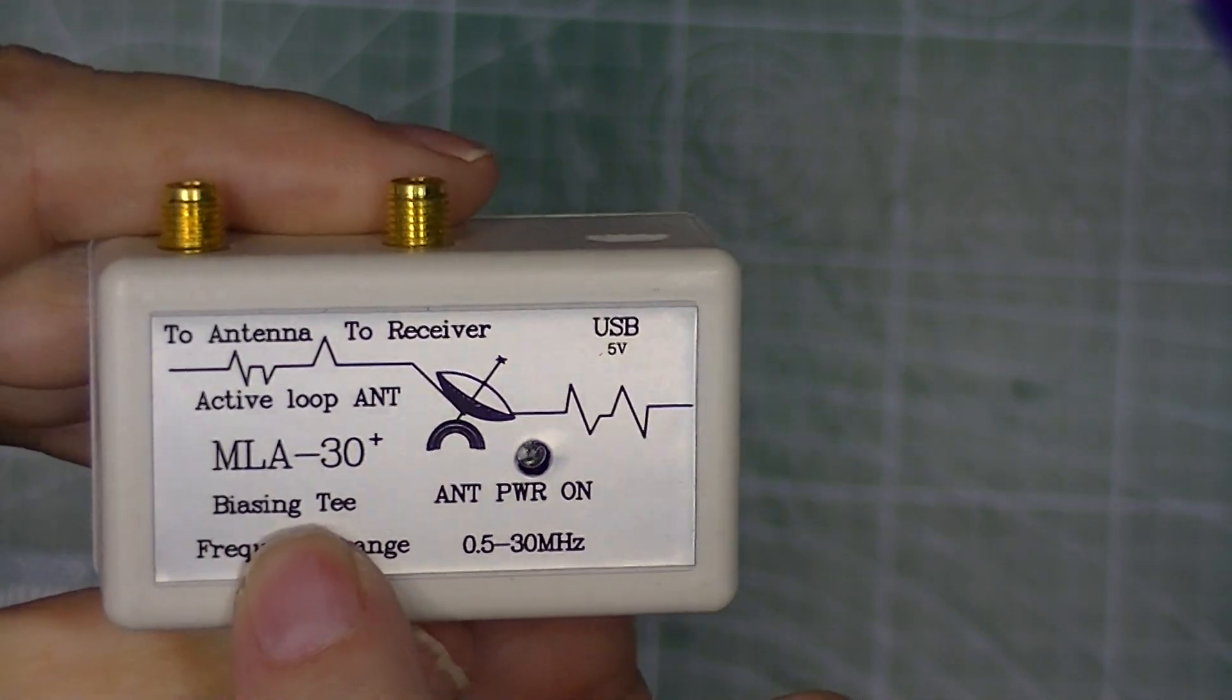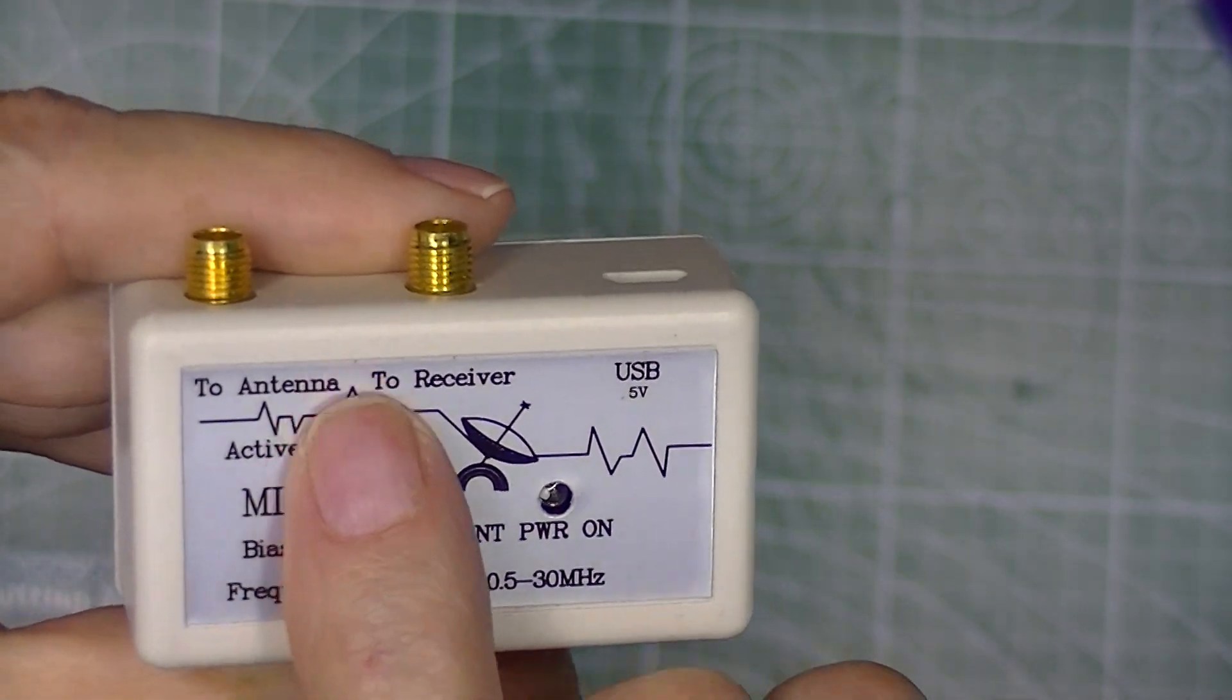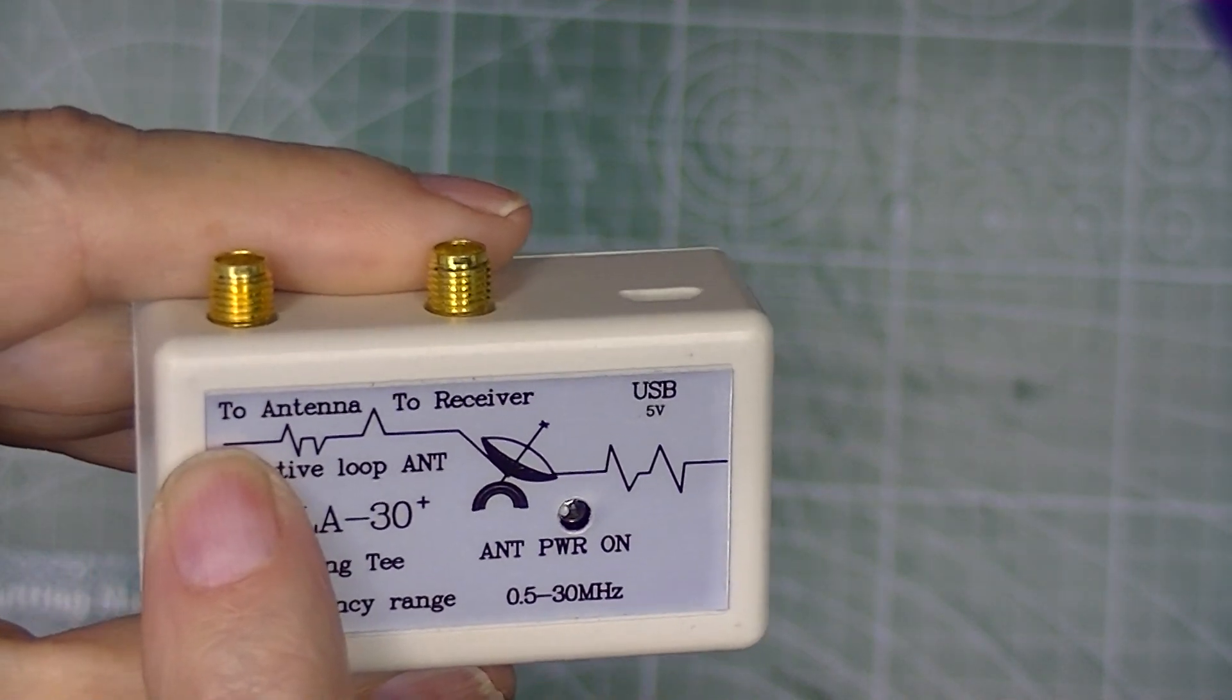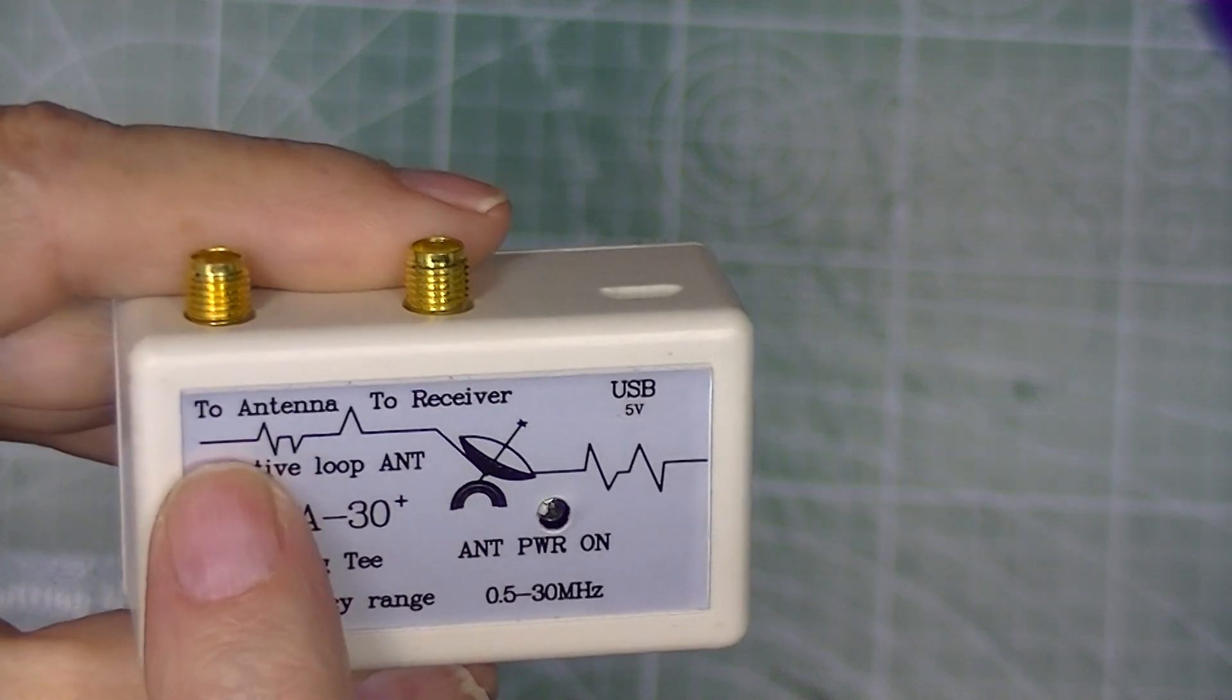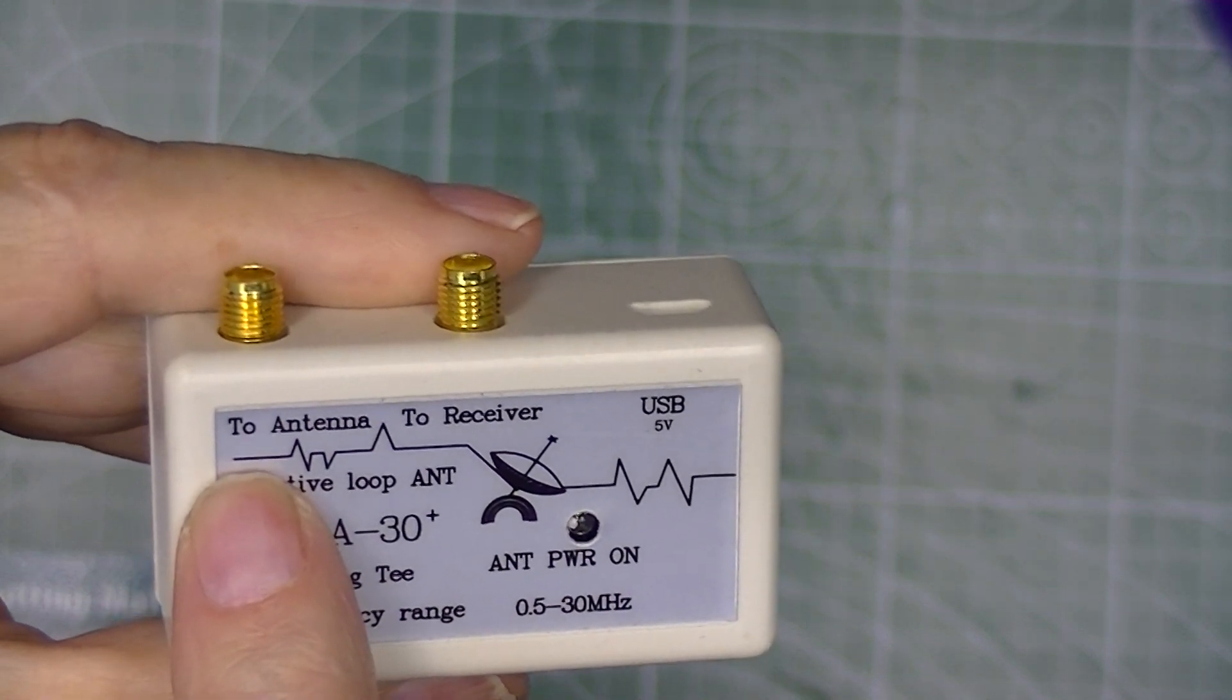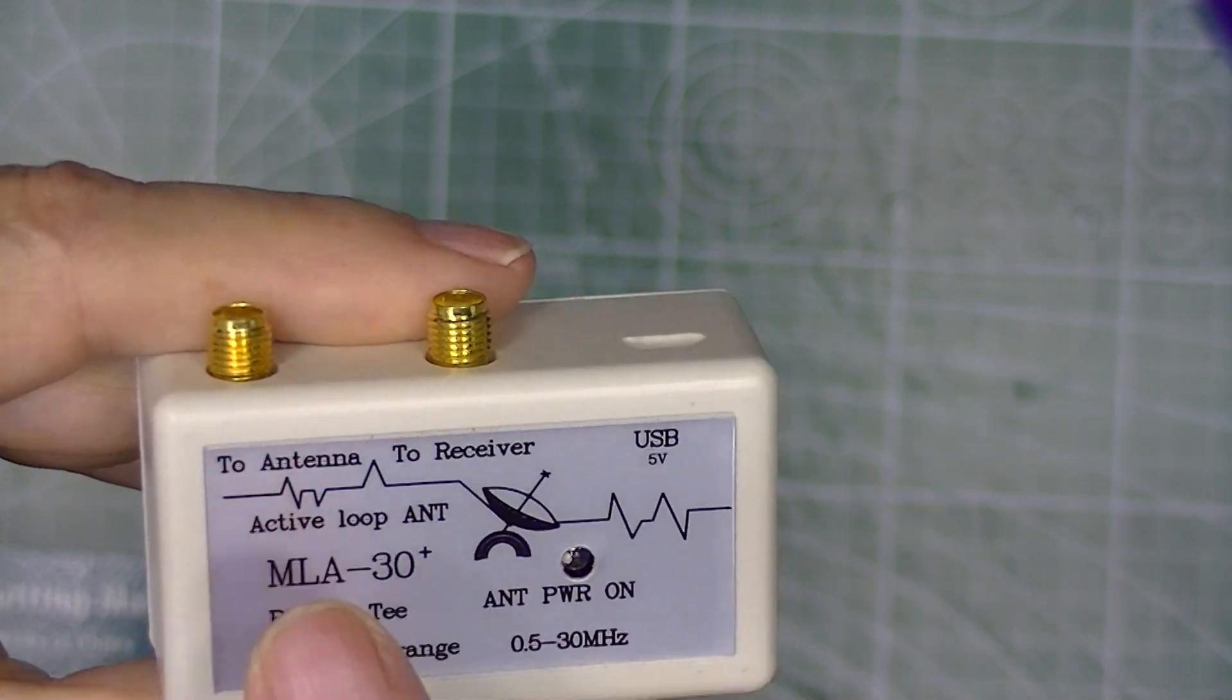A biasing T, so picture a T with a capacitor in the center and a voltage connection on one side of the capacitor. So this is how the amplifier at the antenna base is powered. They use this piece of coax for RF coming down from the antenna, as well as power going up to the antenna from this box.